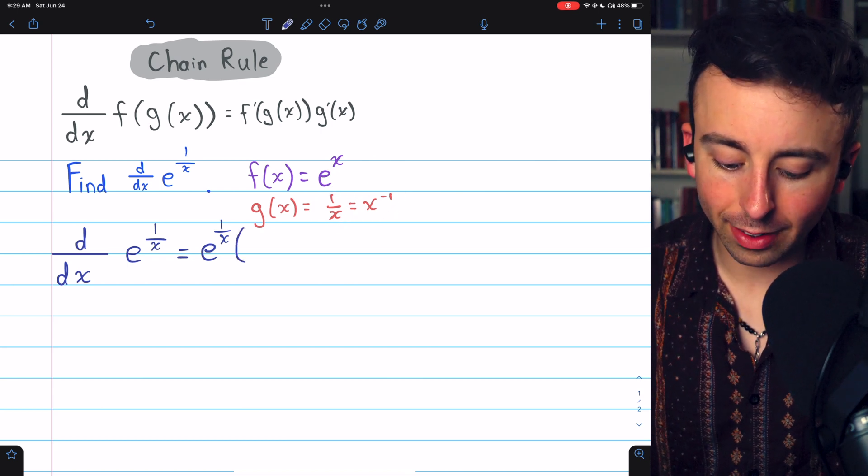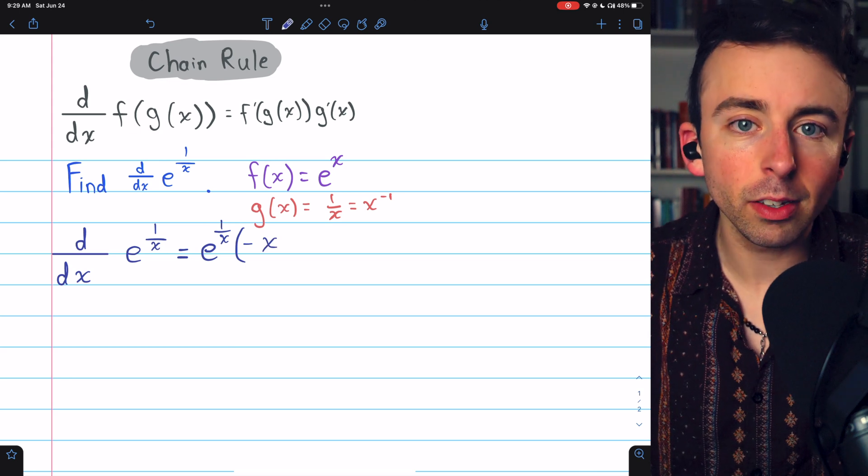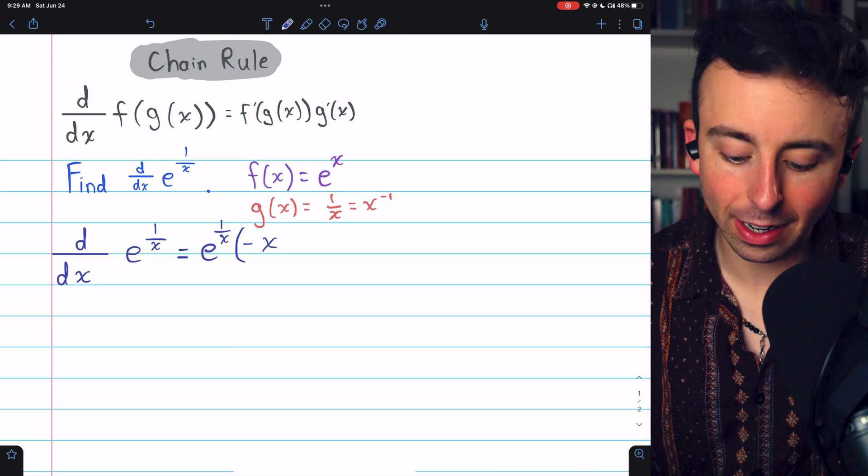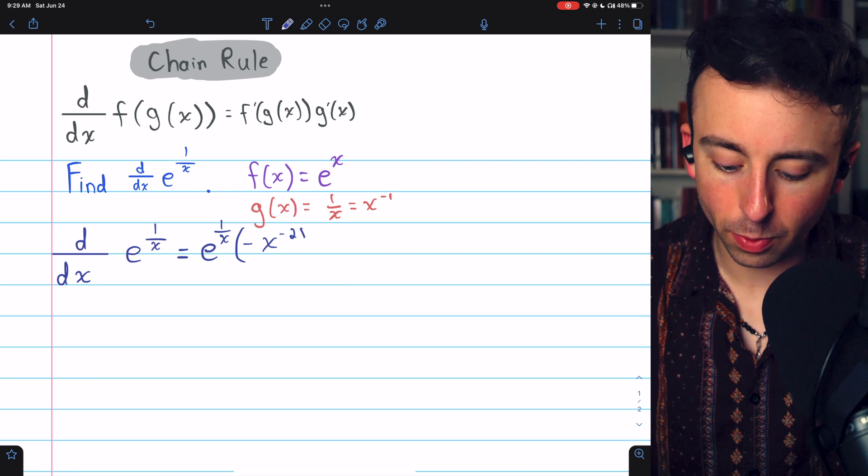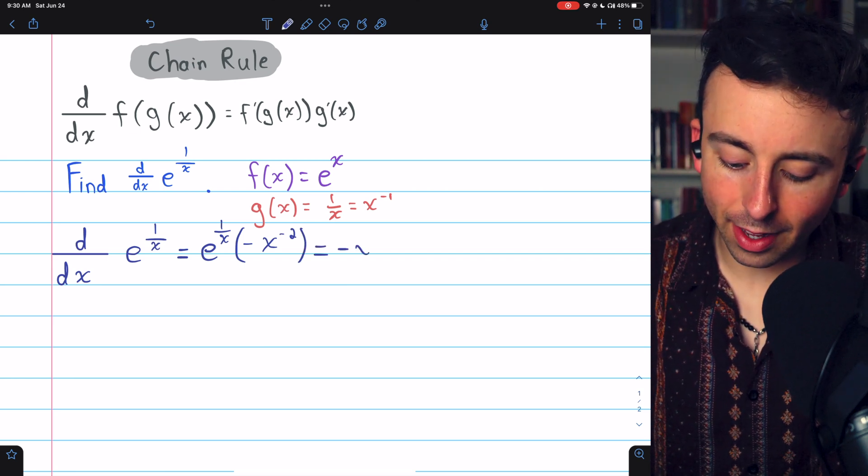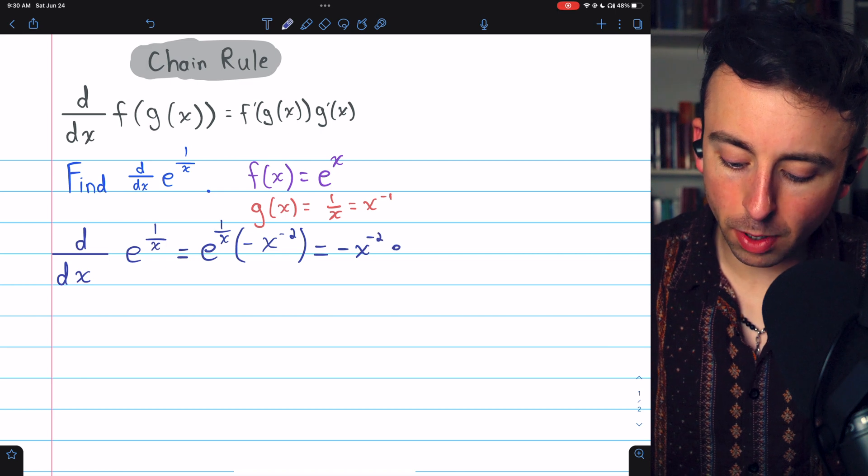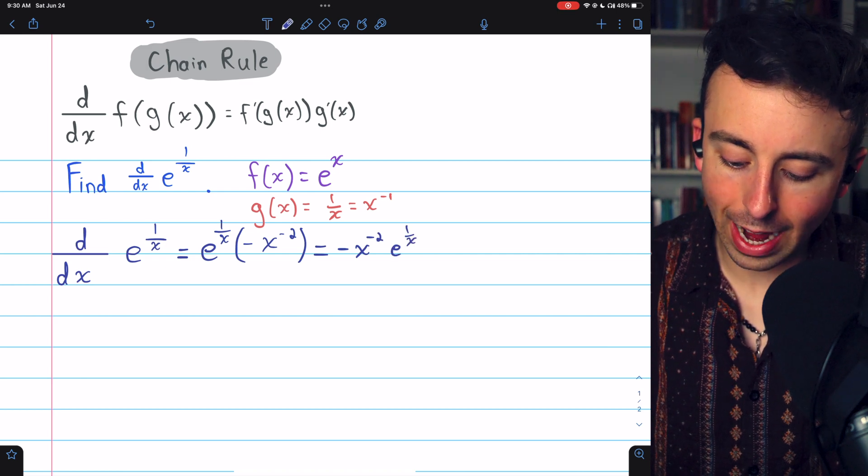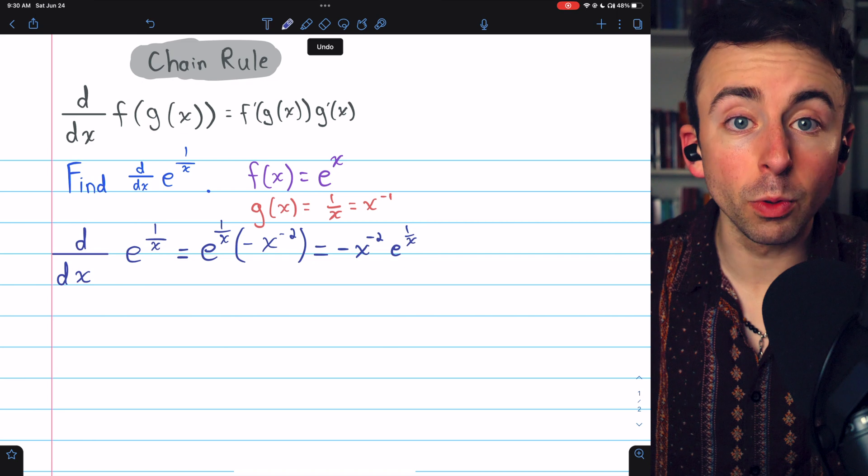The derivative of x to the negative 1 by the power rule is negative x, bringing that exponent down as a factor, to the power of negative 2. That's reducing the power by 1. And we may prefer to write this as negative x to the negative 2 multiplied by e to the 1 over x. And there is our derivative.